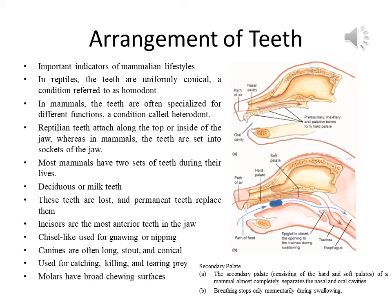Reptilian teeth attach along the top or inside of the jaw, whereas in mammals the teeth are set into sockets of the jaw. Most mammals have two sets of teeth during their lives; the first teeth emerge before or shortly after birth and are called deciduous or milk teeth. These are lost and permanent teeth replace them.